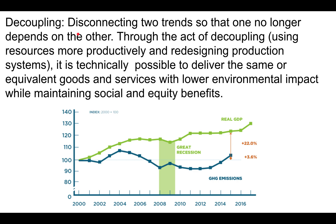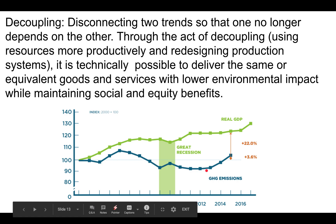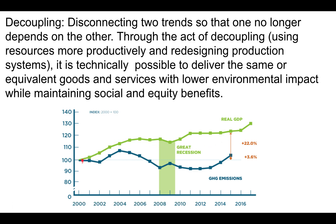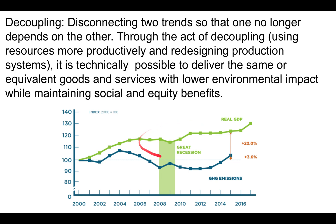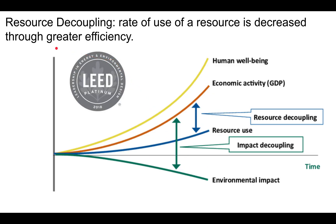One key concept is decoupling — disconnecting two trends so that one no longer depends on the other. It usually involves using resources more productively and redesigning production systems. It is technically possible to deliver the same or equivalent goods and services with lower environmental impact while maintaining social and equity benefits. An example: in the past, greenhouse gas emissions rose in line with GDP growth, but now GDP is going up while greenhouse gas emissions are going down or not rising as fast — that's decoupling.